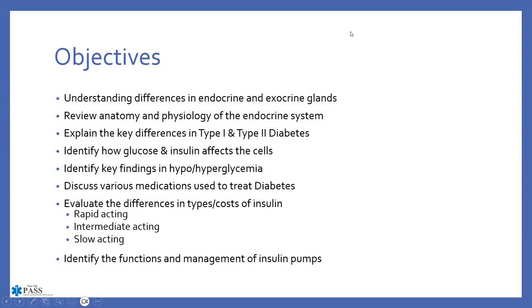The objectives here: we're going to understand differences in endocrine and exocrine glands, review anatomy and physiology of the endocrine system, talk key differences in type 1 and type 2 diabetes — which is really what I want to focus on most — identify how glucose and insulin affect the cells, look at key findings in hypo and hyperglycemia, medications used to treat diabetes, evaluate differences in types and cost of insulin from rapid to intermediate to slow acting, and identify the functions and management of insulin pumps.